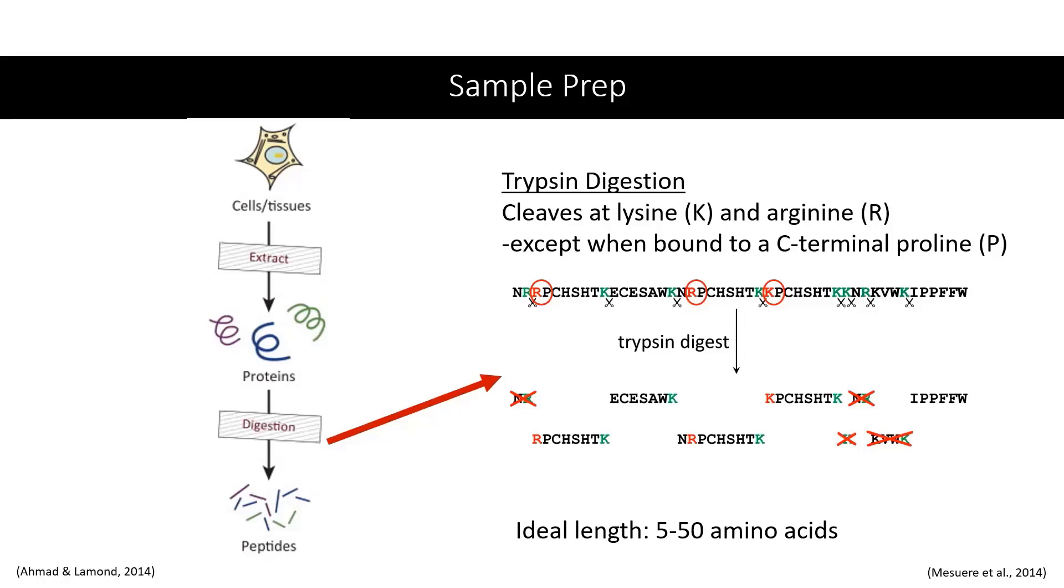Finally, after trypsin has digested the protein, the mass spectrometer can only read peptides with lengths of 5 to 50 amino acids. Therefore, the peptides shown here that are under 5 amino acids in length have been X'd out, since they will not be read.